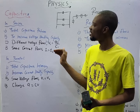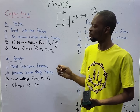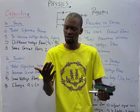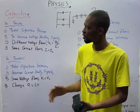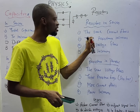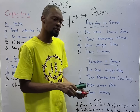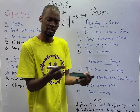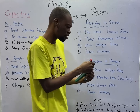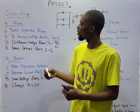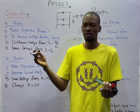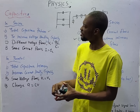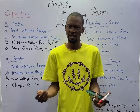For capacitors in series, the total capacitance will reduce — they do not add up. When you add capacitors in series, total capacitance reduces. But for resistors in series, the total resistance will increase. When you connect resistors in series, there will be more resistance; they add up, making the total resistance increase. So capacitors in series is opposite to resistors in series — resistance adds up in series, but capacitance reduces in series.